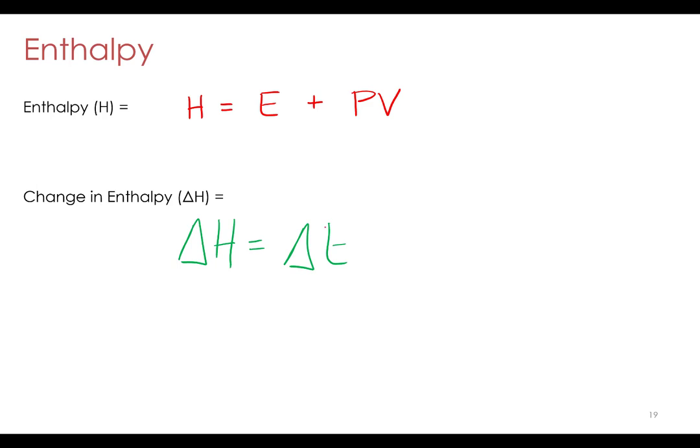Delta H equals the change in energy plus pressure, this is going to be enthalpy at constant pressure, not constant volume. At constant pressure, so the volume can change, the pressure won't. So delta H equals delta E plus P delta V.